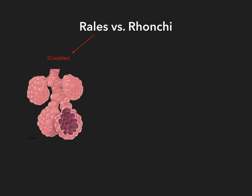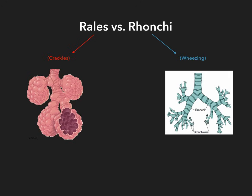Ronchi, on the other hand, are going to be used interchangeably with the word wheezing. Ronchi or wheezing occurs in the large airways, or at the level of the bronchus or the bronchi. So in summary so far: Rails or Crackles occur at the alveoli; Ronchi or wheezing occurs at the bronchus.